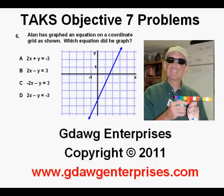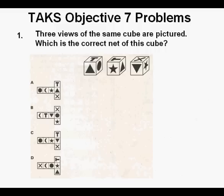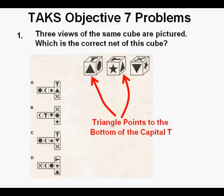TAKS Objective 7 Problems, Problem 1. Three views of the same cube are pictured. Which is the correct net of this cube? Here's a simple way to approach this problem. Let's look at the order of the images on the cube that is provided and see if we can figure it out.